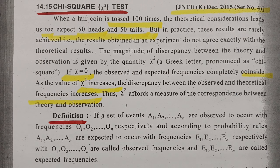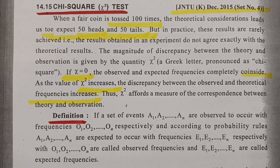For instance, if you go to a mobile showroom to purchase a mobile, you choose one mobile, and your expected value is one price. After observing the mobile, your observed price will be one. The chi-square test is used to determine whether the observed and the expected values are significant or not — that is, the difference or variation between the expected value and the observed value.